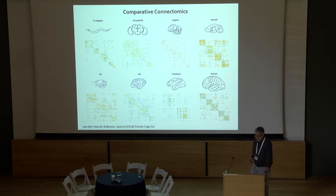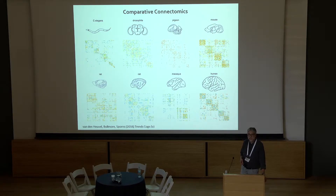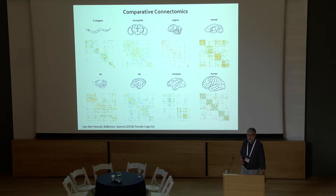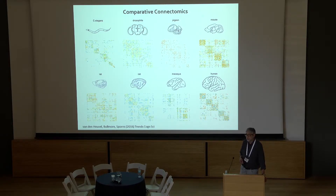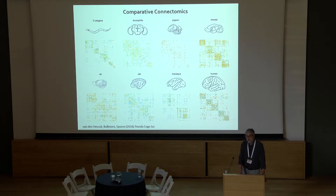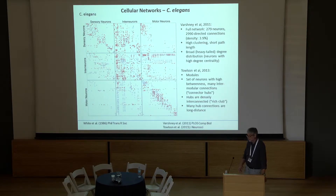Comparative connectomics is the study of network descriptions of whole brains or circuits across different species. We currently have a handful of species including humans, invertebrates like C. elegans and Drosophila, and a variety of vertebrate and mammalian species. This sets up an opportunity to compare and look for commonalities as well as differences in the topological architectural principles by which these networks are organized.